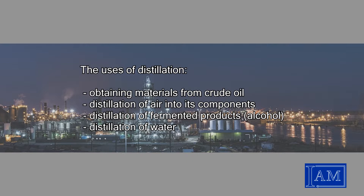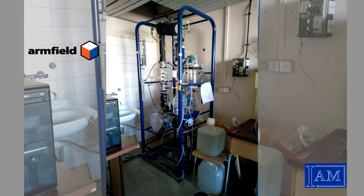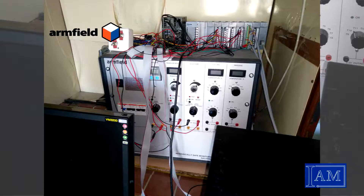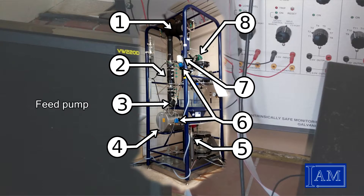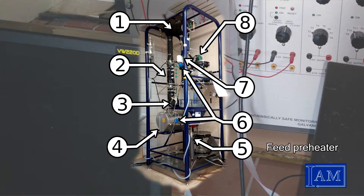Our faculty owns a distillation column from Armfield. It consists of two parts: a standing processing unit and a control console. The parts of the processing unit are the condenser, distillation column, the feed pump, the re-boiler, the feed preheater, the automated and manual valves, and finally the reflux.